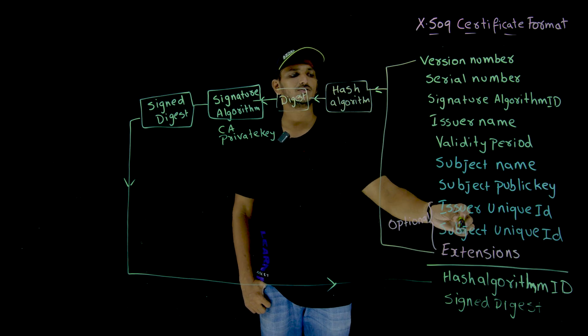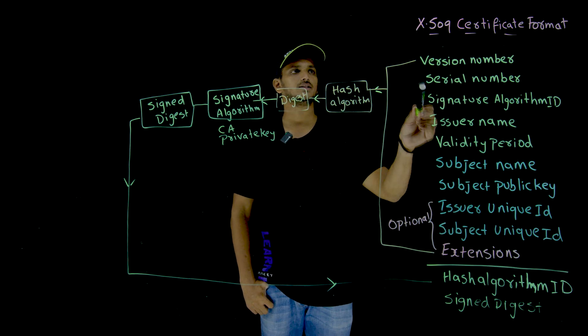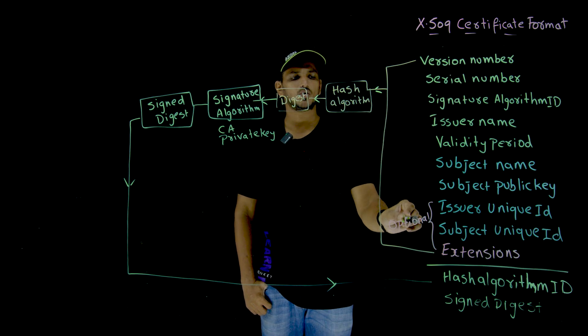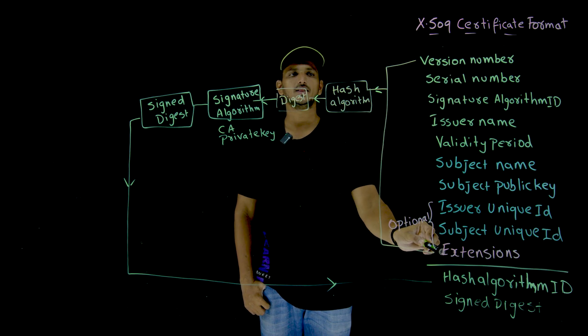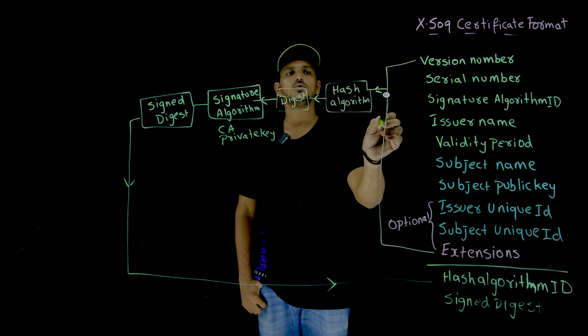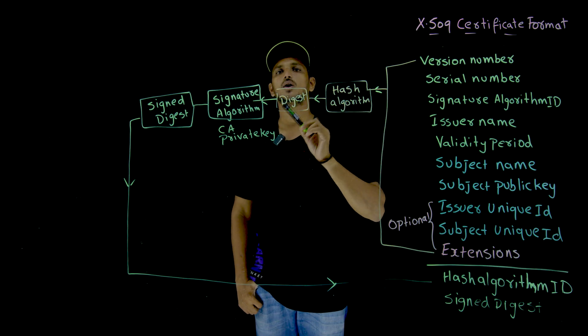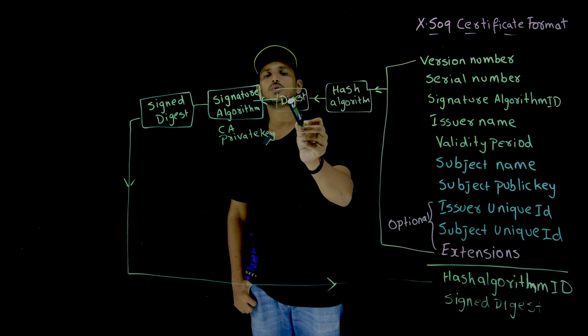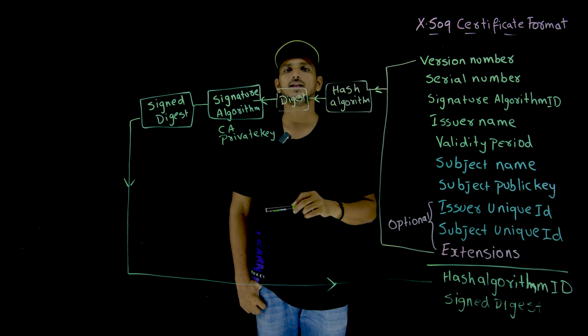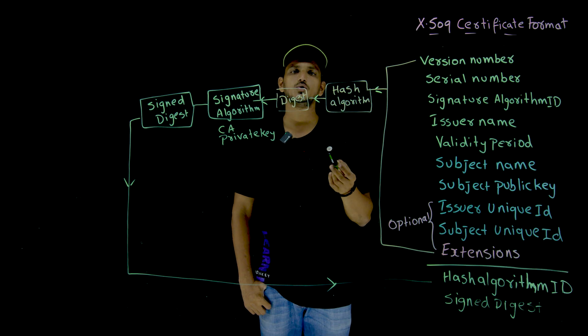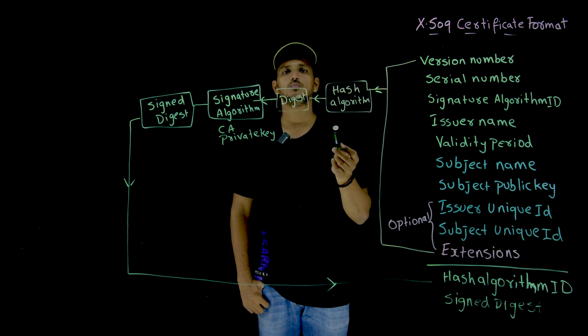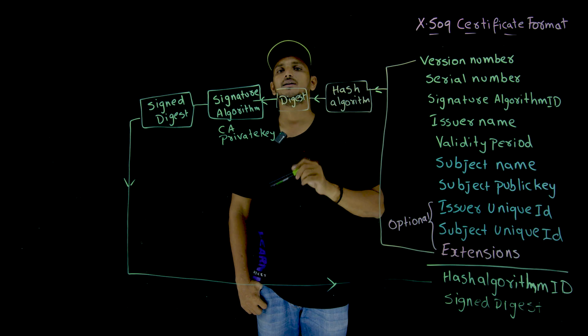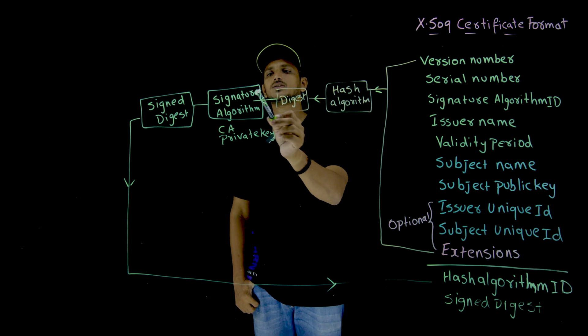This is the sequence we have to follow in the X509 certificate format. The entire information, whatever the information provided here, this information is going to be sent into a hash algorithm. And with this hash algorithm, it is going to provide a digest. Hoping that you already know what hash algorithm means, what is meant by digest. Digest is used to provide integrity.